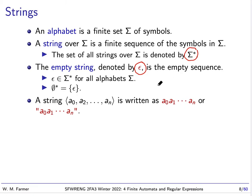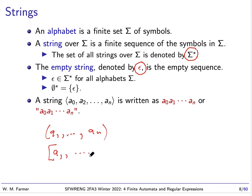For every alphabet, epsilon is going to be a member of the set of all strings of that alphabet. If our alphabet is the empty set, then the set of all strings of that alphabet will be exactly the set containing one string: the empty string. There are different ways of writing down a sequence — angle brackets, square brackets — but we're going to think of a string as just being written down directly, or with quote marks. Remember, all a string is is a finite sequence of symbols from an alphabet.